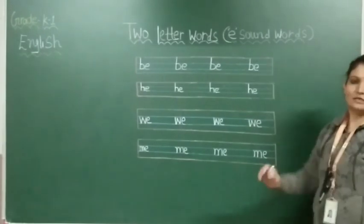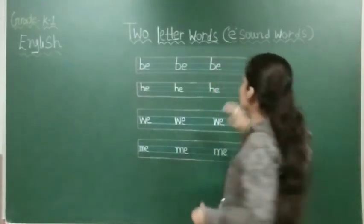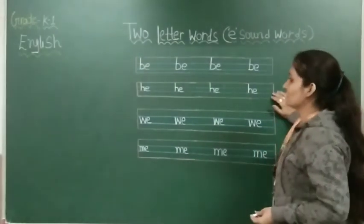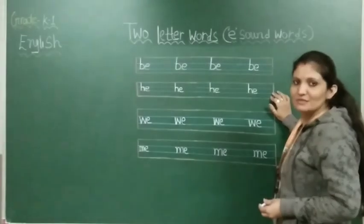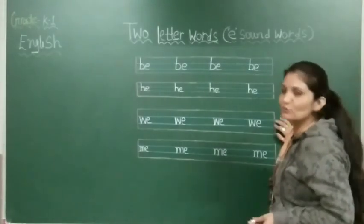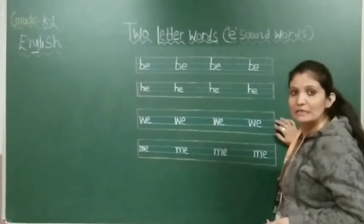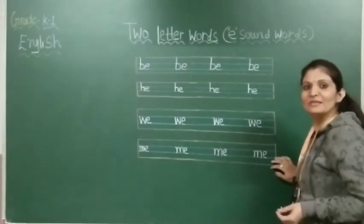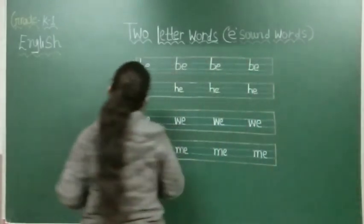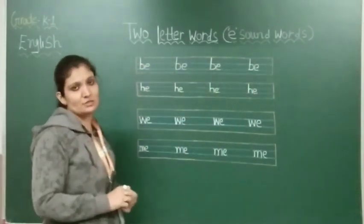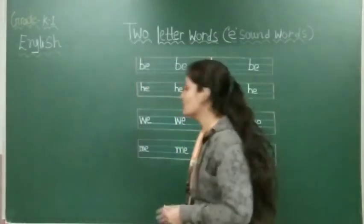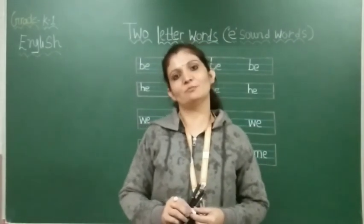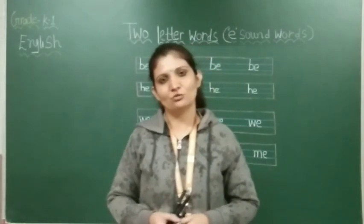See here — which four E-sound words do we have? First is BE, second is HE, third is WE, and fourth is ME. I hope you understand E-sound words. Daily you have to practice these E-sound words. Take care of yourself. We will meet in the next video. Bye-bye!